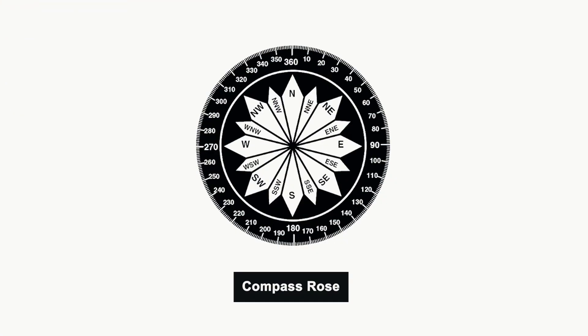Another really important thing is for students to learn how to read a compass rose and learn their cardinal directions — meaning the number as it correlates to north, east, south, and west: 360 degrees, 90 degrees, 180 degrees, and west at 270 degrees.